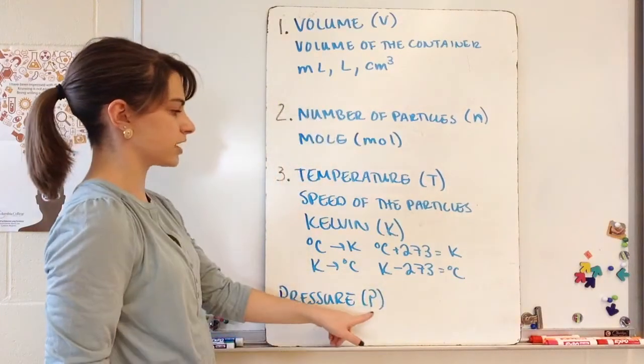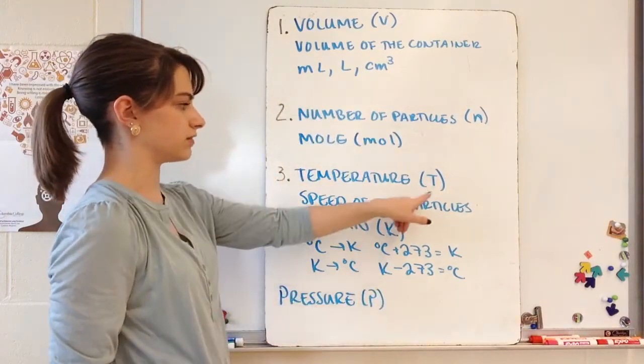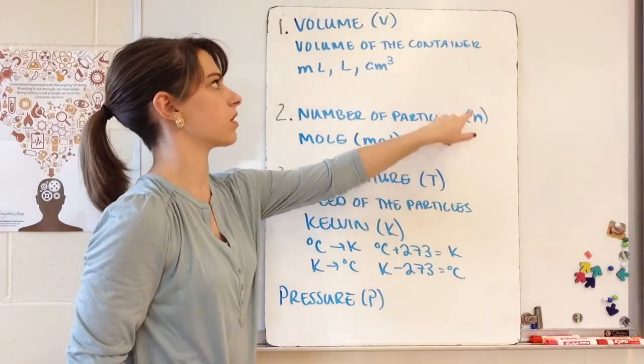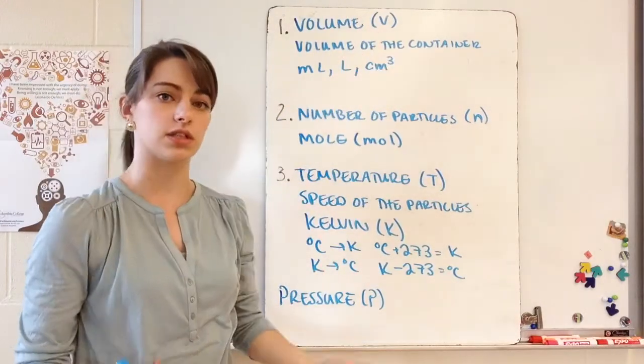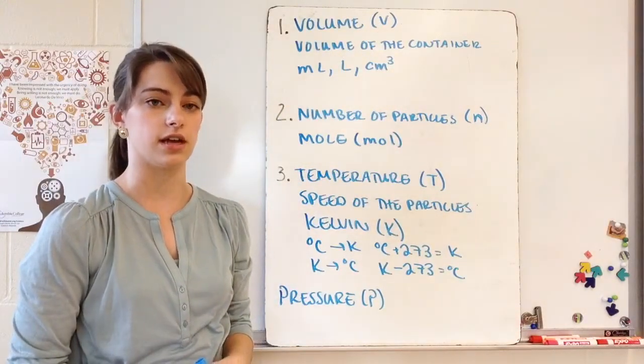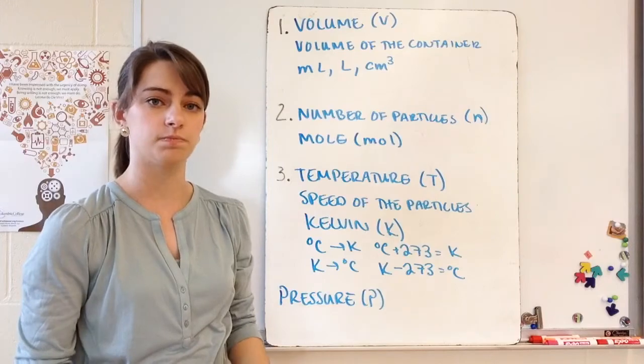As a final note, when we talk about pressure in an equation, pressure is abbreviated with a capital P. So we have pressure, temperature, number of particles, and volume — those are the variables you're going to see in this unit.